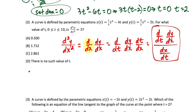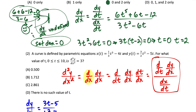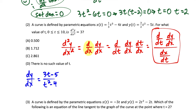So dy/dx equals dy/dt over dx/dt. The derivative of the y equation gives 3t minus 5 in the numerator, and deriving x gives t squared minus 4 in the denominator. Now for the second derivative, we apply the quotient rule in the numerator: (t squared minus 4) times 3, minus (3t minus 5) times 2t, all over (t squared minus 4) squared. Then we divide by dx/dt, which is t squared minus 4 again — a common mistake is forgetting this step.